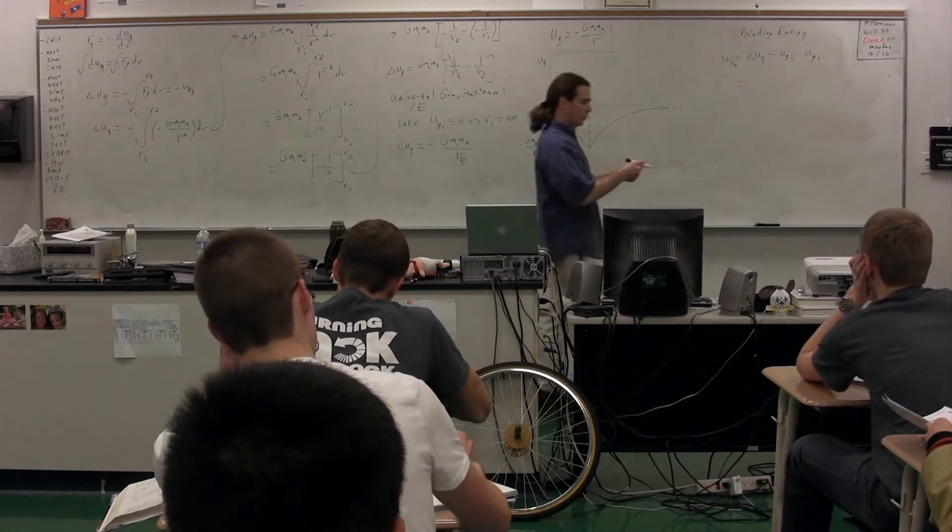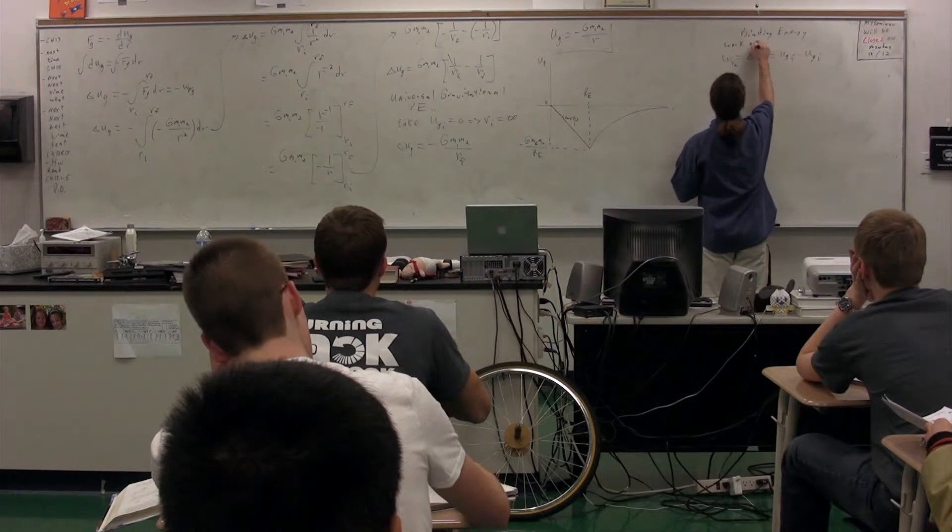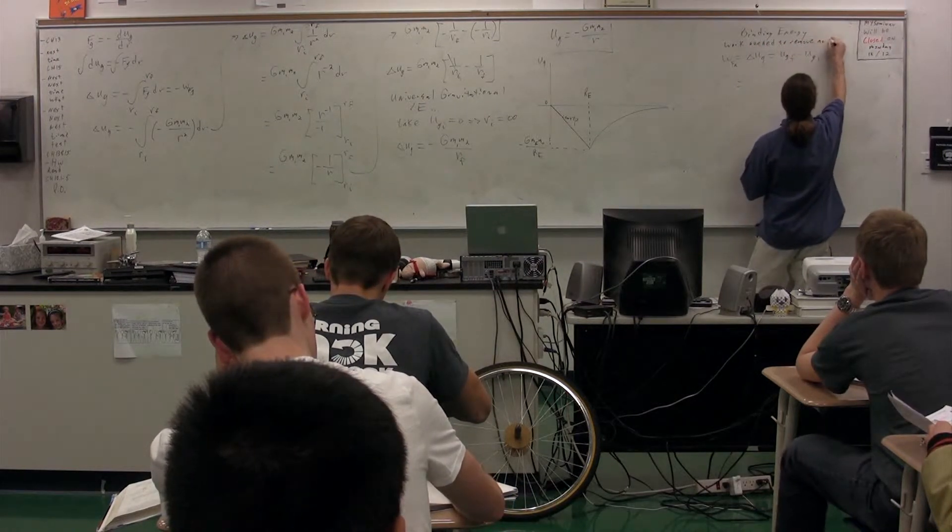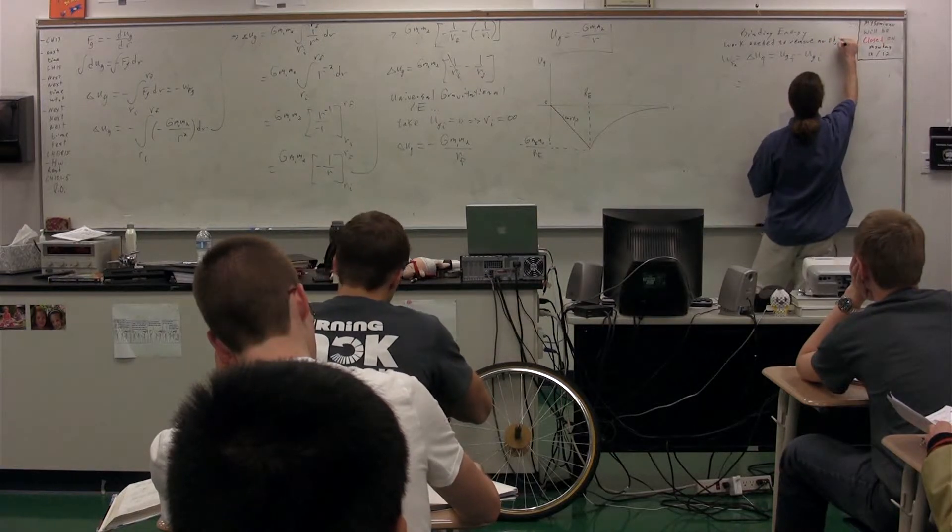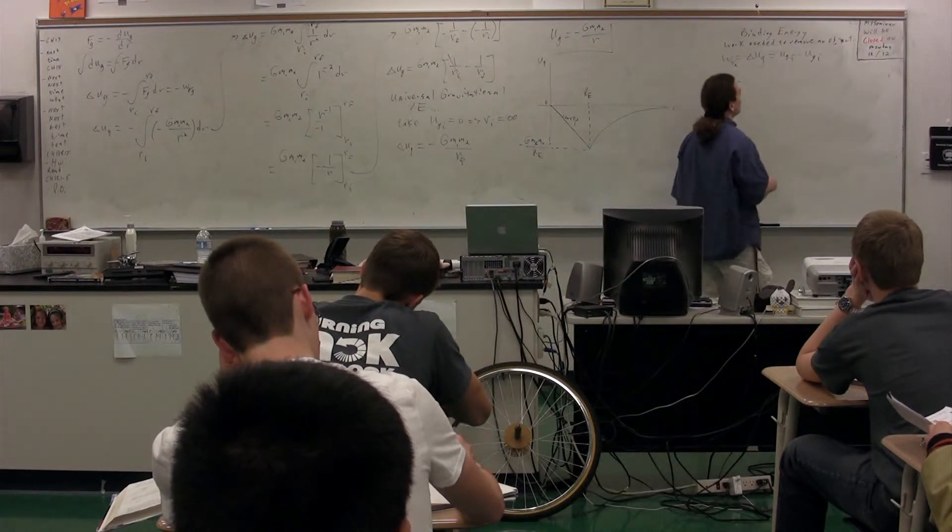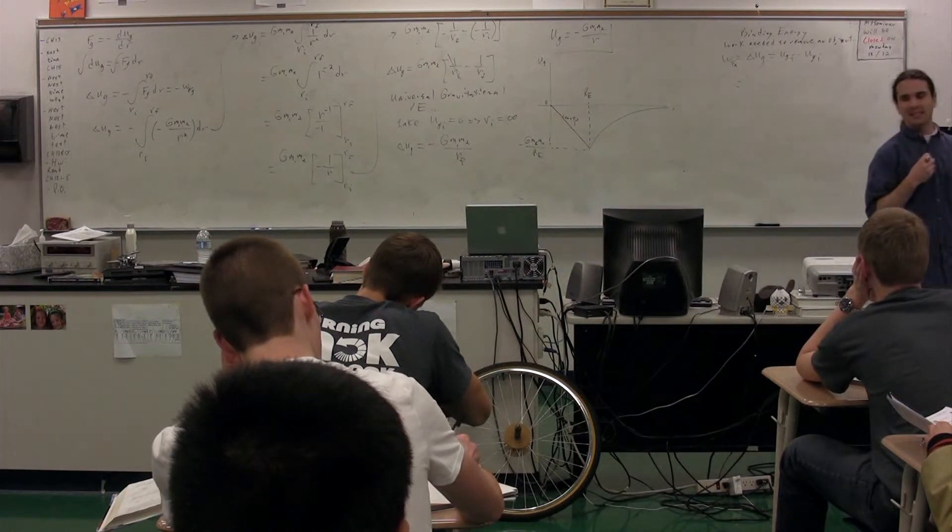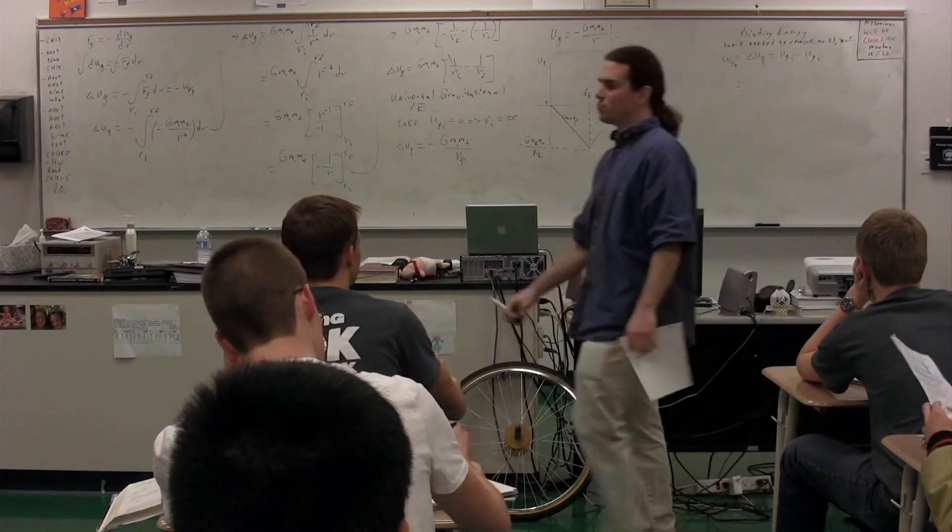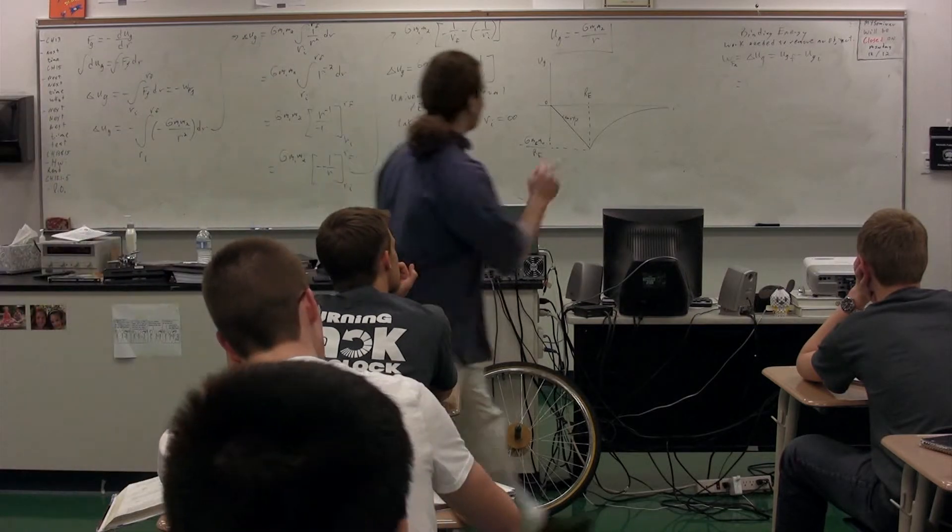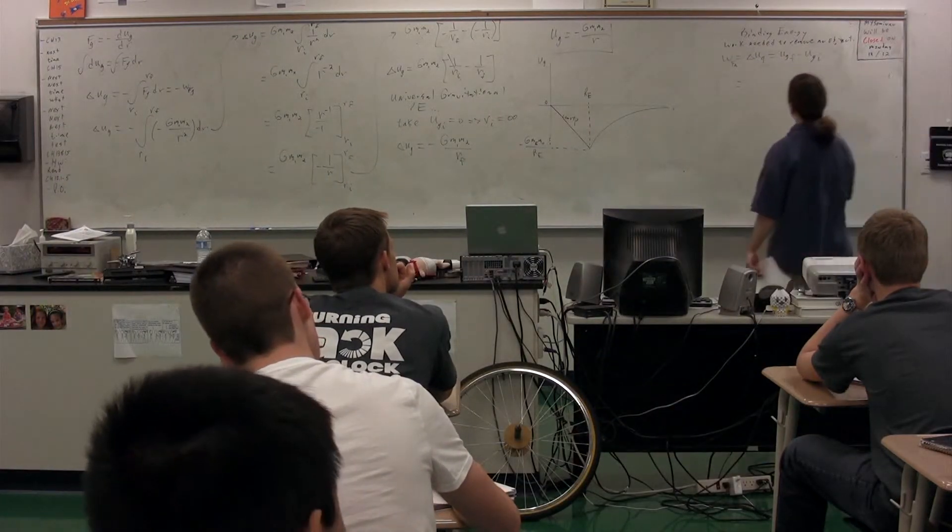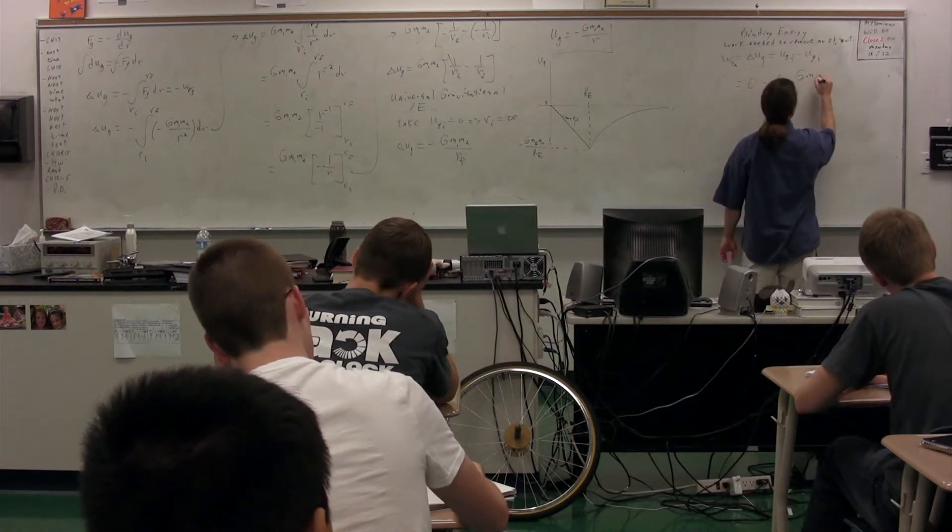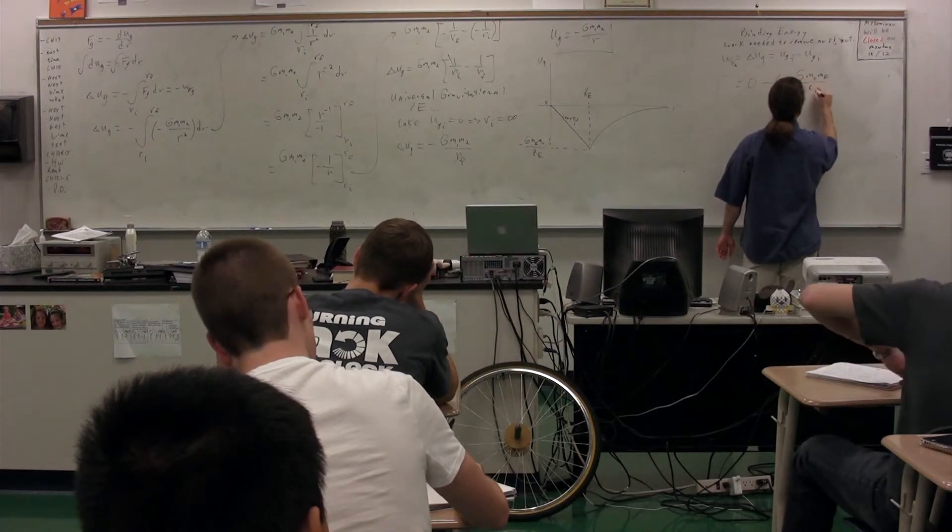So this work we're finding here is the work needed to remove an object from the planet. Well, what would be the gravitational potential energy of an object if we completely remove it from the planet? Zero, because it would be infinitely far away. So the gravitational potential energy final would be equal to zero minus whatever we start with initially, which is going to be big G, mass of the object, the mass of the earth, divided by the radius of the earth.